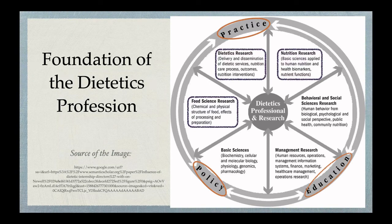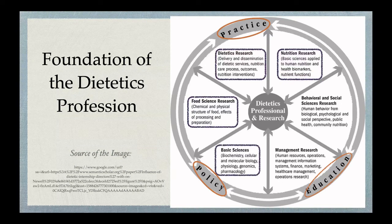Food science research pervades the physical and chemical structure of food, the effect of processing and preparation on nutrients and other functional components of food, and the development of innovative nutrition care formulas and dietary supplements. Basic sciences research covers biochemistry, cellular and molecular biology, physiology, nutrigenetics and nutrigenomics, and drug and nutrient interaction.